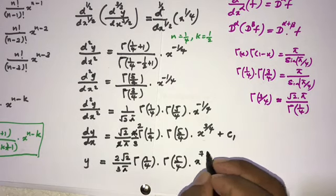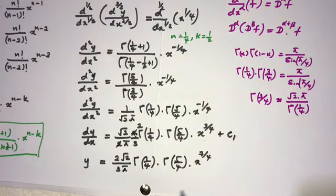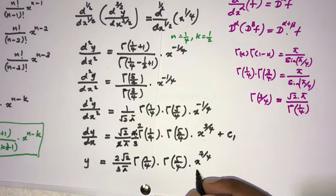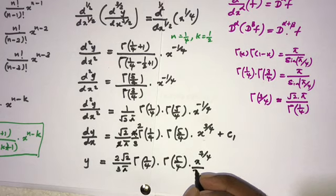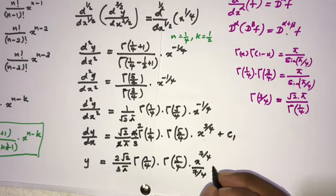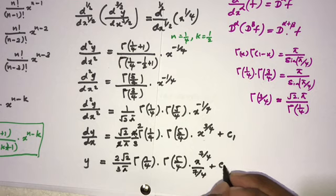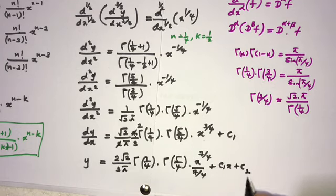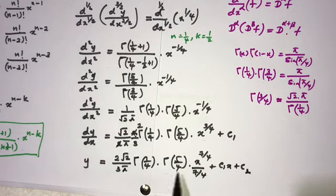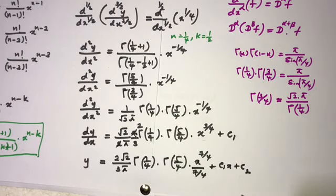Integrating again: y = (2√2)/(3·5) · (1/(π)) · Γ(1/4)·Γ(5/4) · x^(7/4)/(7/4) + C₁x + C₂, which simplifies to y = (8√2)/(105π) · Γ(1/4)·Γ(5/4) · x^(7/4) + C₁x + C₂. This is the general solution. If you liked this video, please subscribe. Thank you for watching.